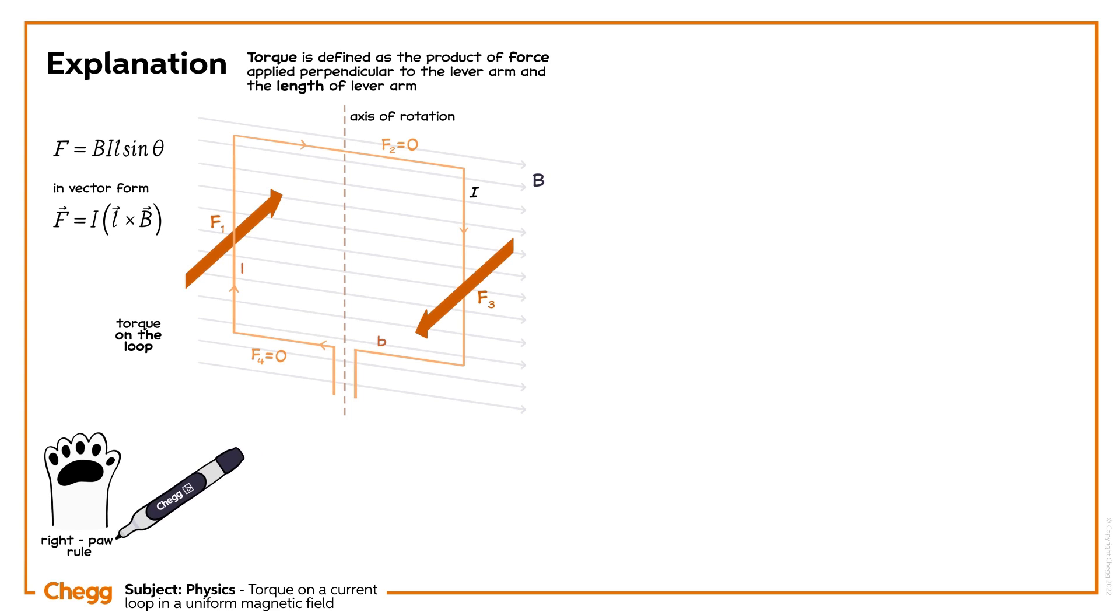Now we will use the right-hand rule to identify the direction of the magnetic force. Let's recall that, according to the right-hand rule, the direction of force f1 is into the plane. The force f3 is out of the plane.